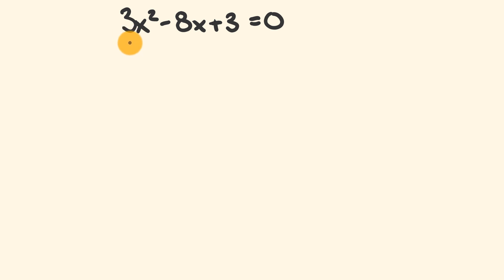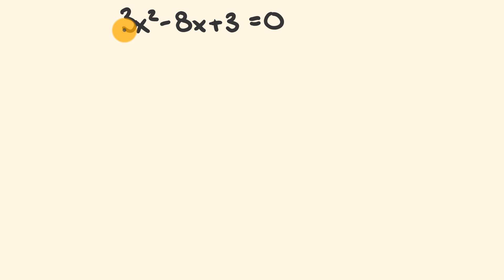So when this occurs, the very first thing we have to do is adjust the equation so we have a coefficient equal to 1. The easiest way is to divide by the coefficient. Here we have a coefficient of 3, so we're going to divide this entire equation by 3.